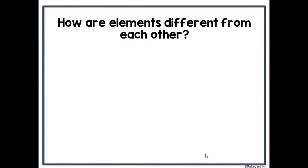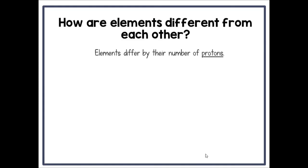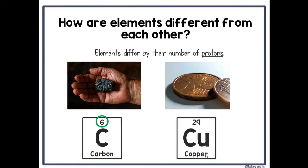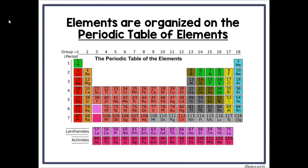How are elements different from each other? The elements differ by their number of protons. Carbon has six protons — here we can see a piece of coal, which is carbon. Copper has 29 protons; a penny is covered in copper. The elements are organized on the periodic table of elements, all in very specific order according to how they react with other elements and in different situations.